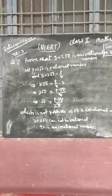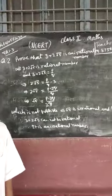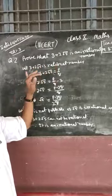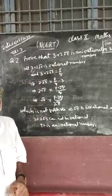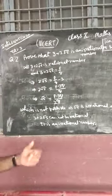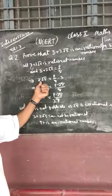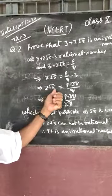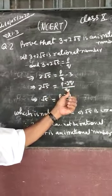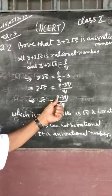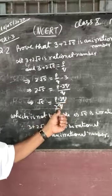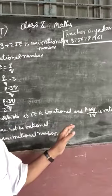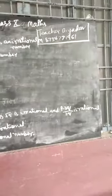Prove that 3 plus 2 root 5 is an irrational number. Let 3 plus 2 root 5 be a rational number and equal to p by q. This implies 2 root 5 equals p by q minus 3, or 2 root 5 equals (p minus 3q) upon q, which implies root 5 equals (p minus 3q) upon 2q, which is not possible as root 5 is irrational and (p minus 3q) upon 2q is rational.